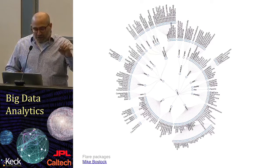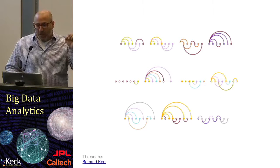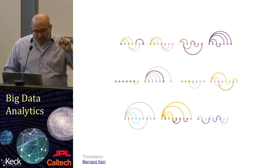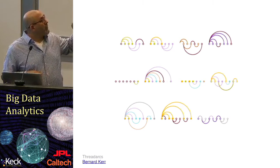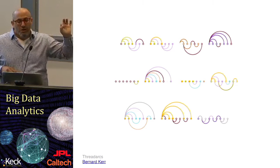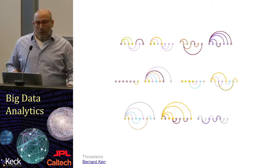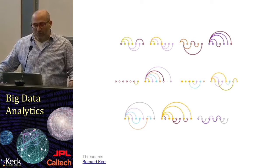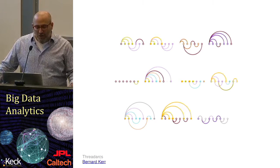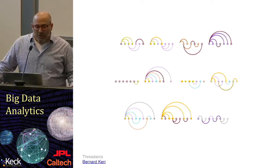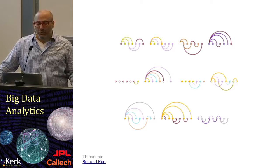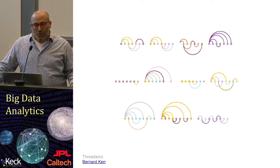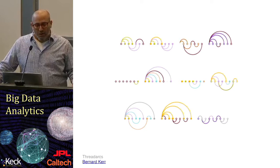This idea of the node link diagram can also be used in what's called thread arcs, which are used to show networks that occur over time. You can show a single node and the way that its children propagate. This is very interesting — the thread arc representation is used to show the way that particular conversational threads are propagating.